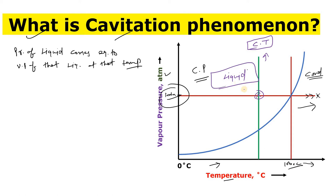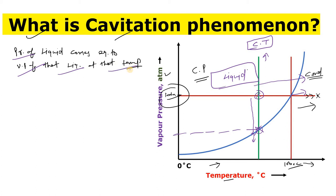Now you want to boil your liquid — there are two ways. First, you can simply increase the temperature, and your liquid will boil. Second, you can simply decrease the pressure. As you decrease the pressure, boiling will start, because at that point your liquid pressure becomes equal to the vapor pressure at that temperature, and the liquid boils.